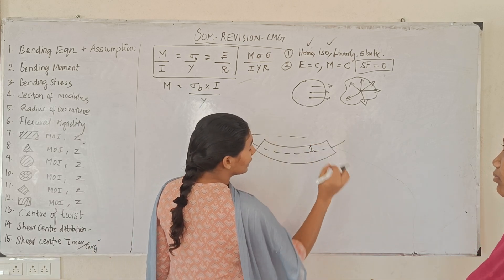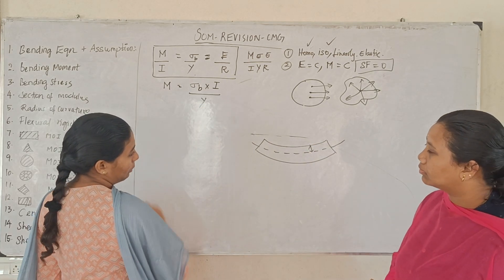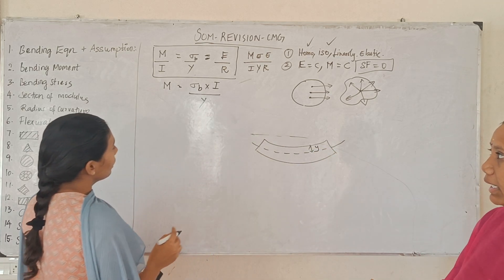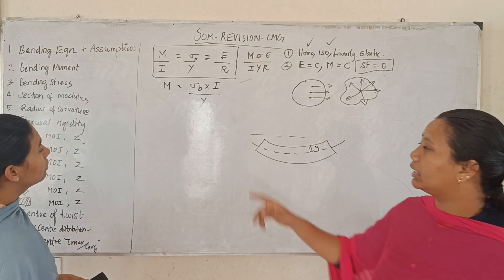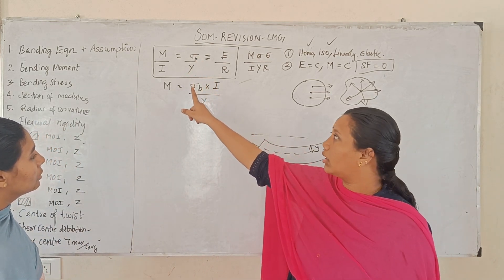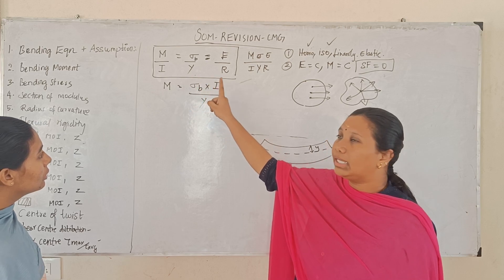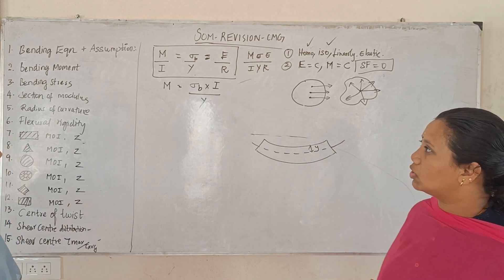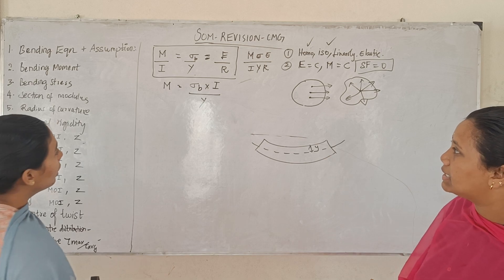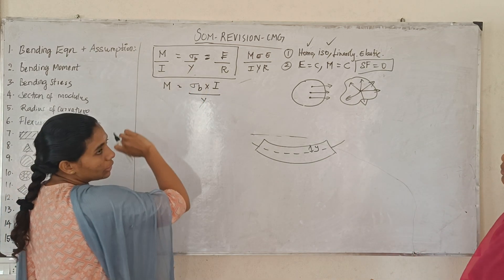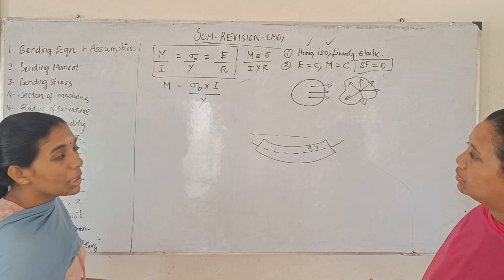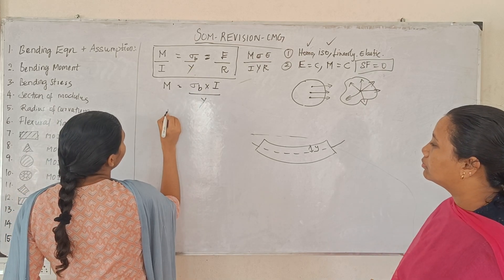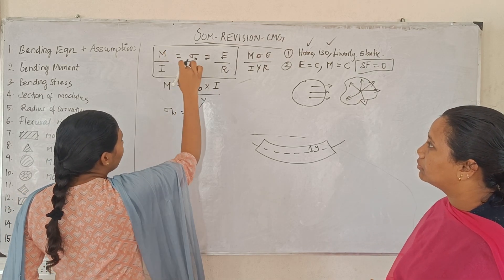Bending moment is equal to sigma b into I divided by y. Bending stress is equal to M into y divided by I.